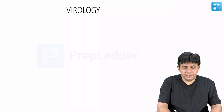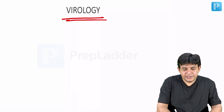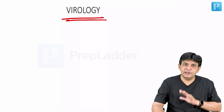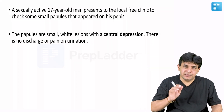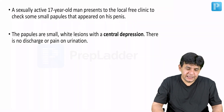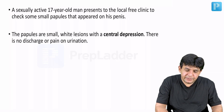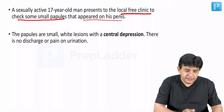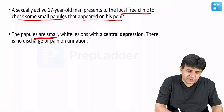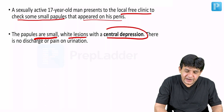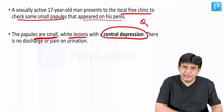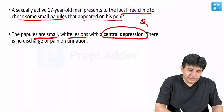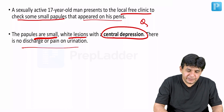Coming to some of the important vignettes of virology on which questions will appear in the exam. A sexually active 17-year-old male presents to a local free clinic to check some small papules that appeared on the penis. The papules are small white lesions with central depression — the characteristic finding here is a pearly white umbilicated nodule, with no discharge or pain on urination.